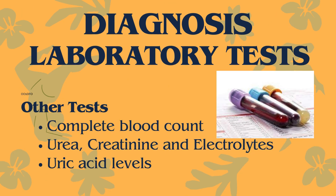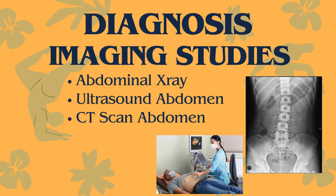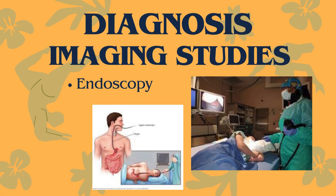In some cases, blood tests may be performed to assess the overall health of the patient and check for signs of dehydration, including complete blood count, urea, creatinine and electrolytes, and uric acid levels. Imaging studies such as abdominal X-rays or ultrasound abdomen may be ordered in severe cases or if complications are suspected. Where a patient presents with persistent symptoms, the doctor may recommend an endoscopy to visualize the gastrointestinal tract directly and rule out other inflammatory conditions.